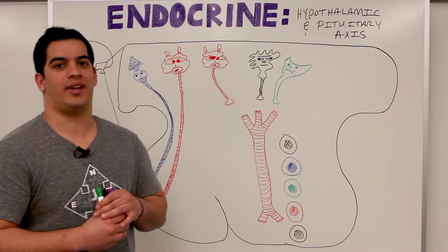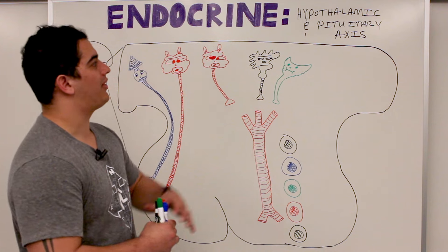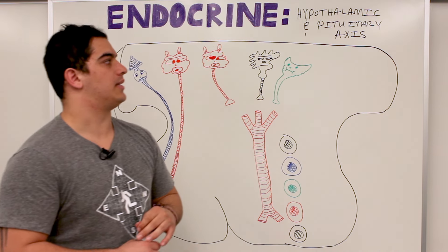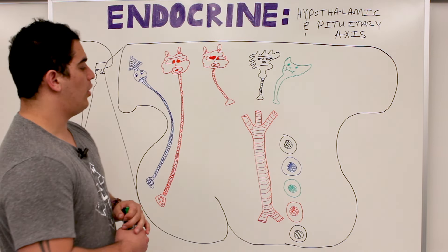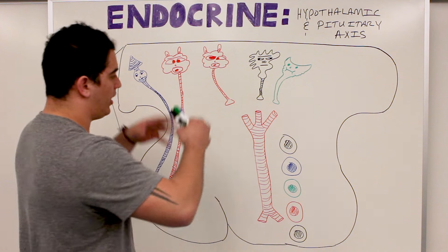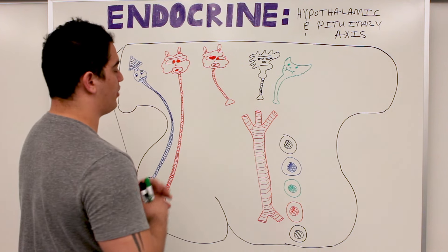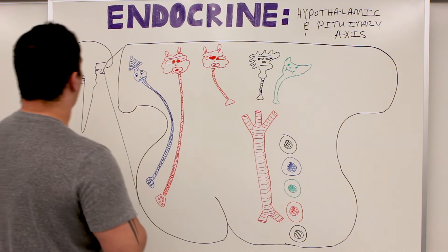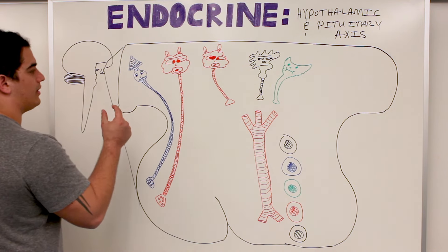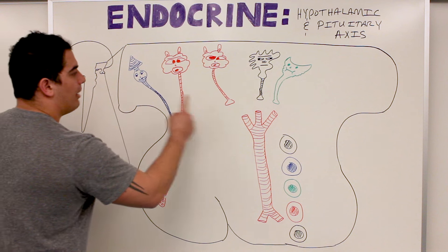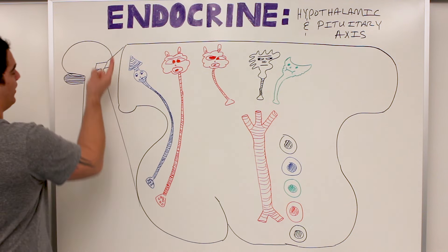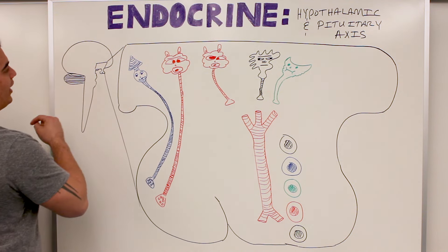Alright Ninja Nerds, in this video we're going to talk about the hypothalamic and the pituitary axis. If you look at this diagram, let's get some anatomy straightforward. I'm taking a piece of the hypothalamus and the pituitary gland out of this overall diagram here.